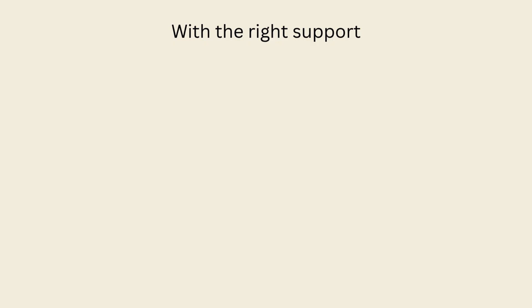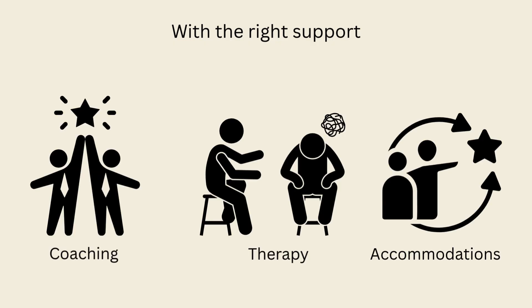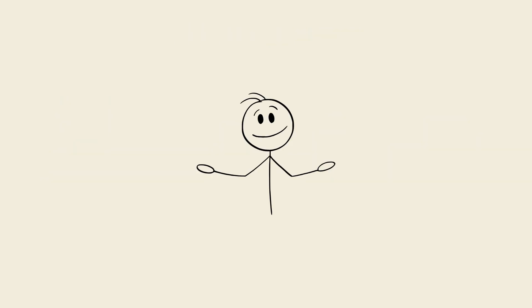With the right support — like coaching, therapy, or accommodations at school and work — people at Level 1 can thrive. Many live independently but still benefit from structured guidance and understanding environments.